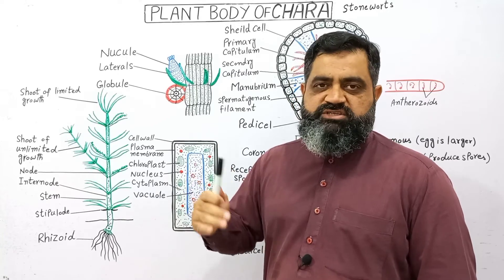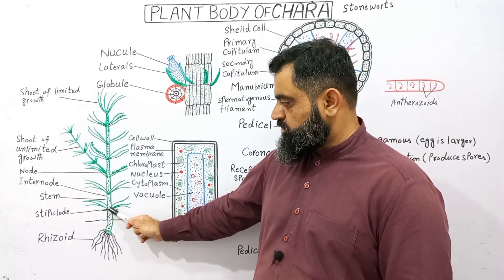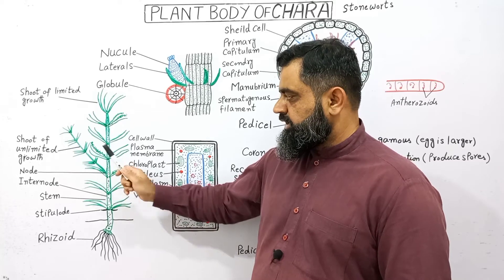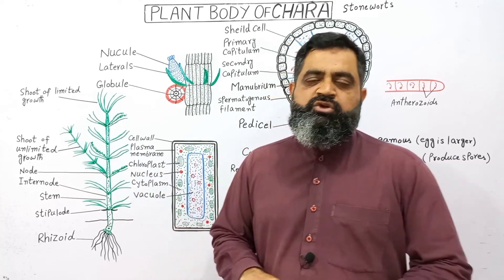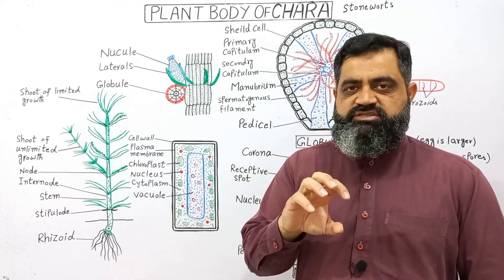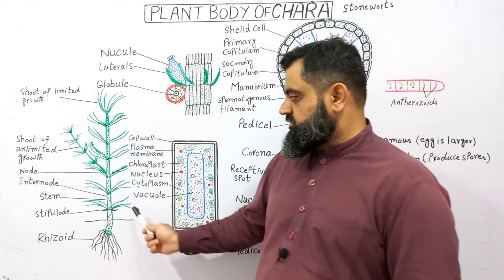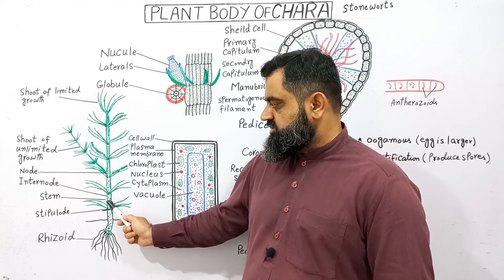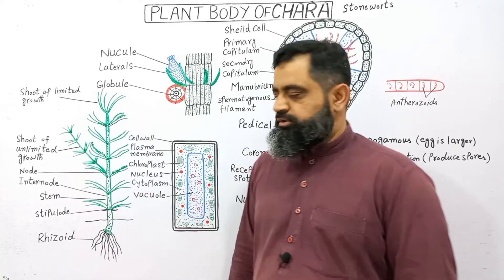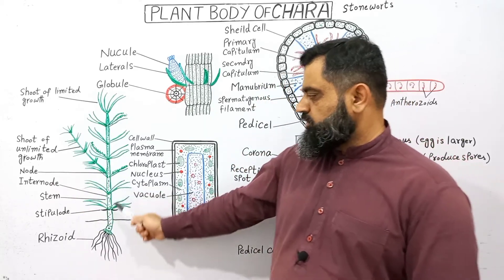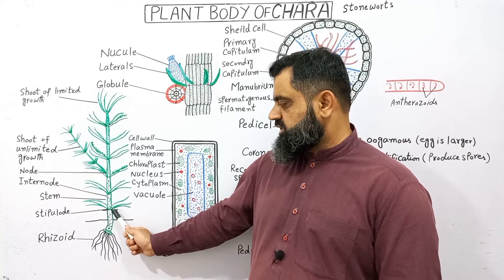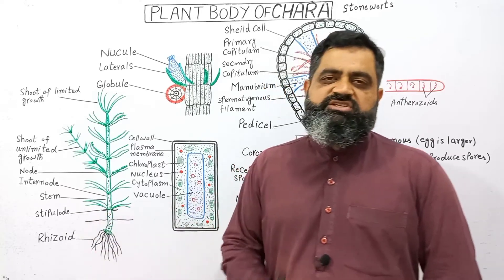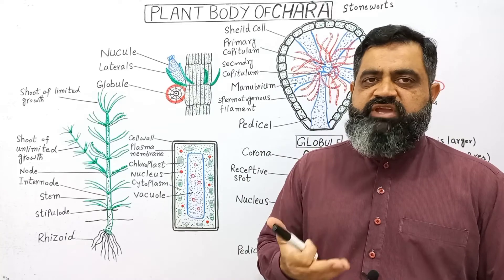On the stem or main plant body you can see nodes and internodes successively. At the point of each node there is a whorl of branches which grows in a circle. The distance between two nodes is known as the internode. At the base of each node we can also see some scale-like leaves which are known as stipulodes, which are just like stipules of angiosperms.